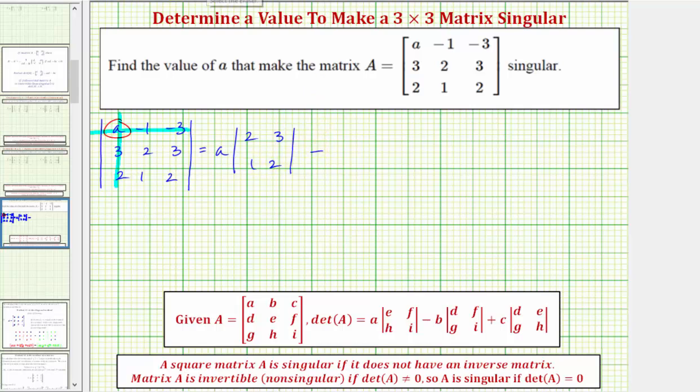Then we have minus. The next element in row one is negative one. So we have minus negative one times a two by two determinant. To find the elements in this determinant, we eliminate the row and column of negative one, which would be row one, column two, which gives us three, three, two, two.